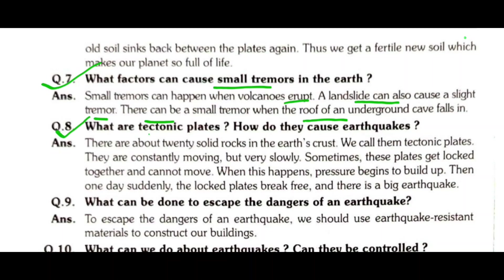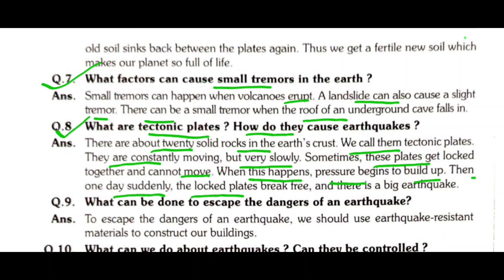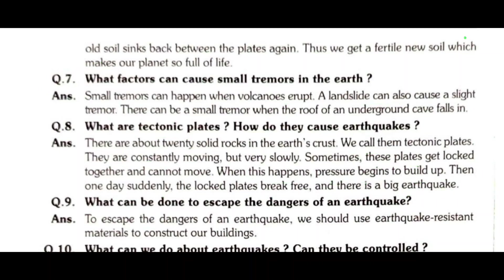Question 8: What are the tectonic plates? How do they cause earthquakes? There are about 20 solid rocks in the earth's crust — we call them tectonic plates. They are constantly moving but very slowly. Sometimes these plates get locked together and cannot move. When this happens, pressure begins to build up. Then one day suddenly the locked plates break free and there is a big earthquake.